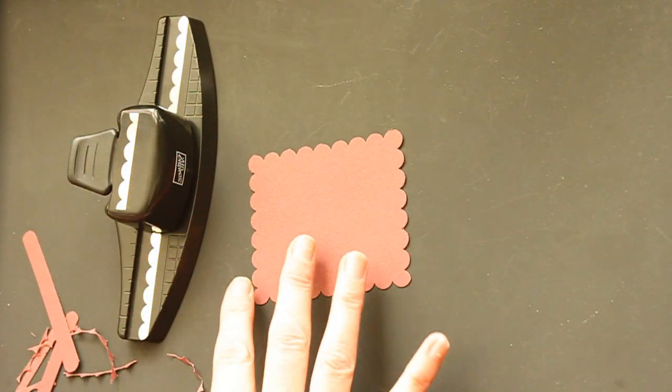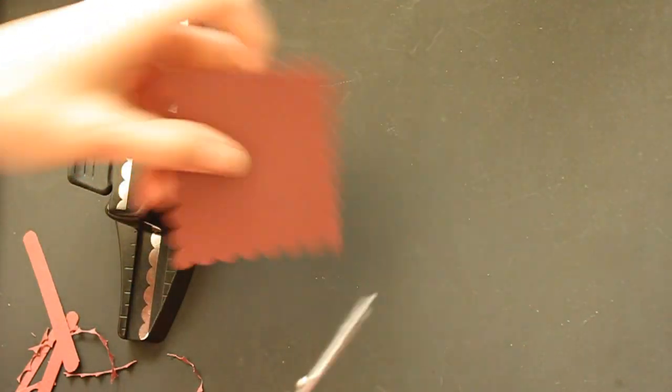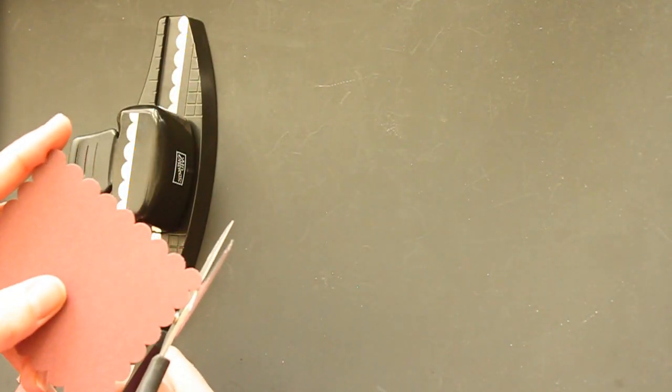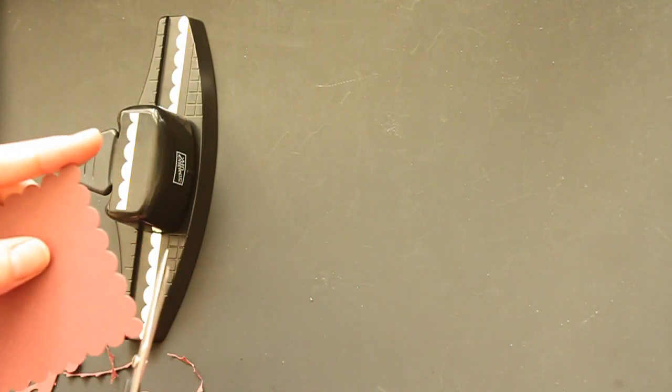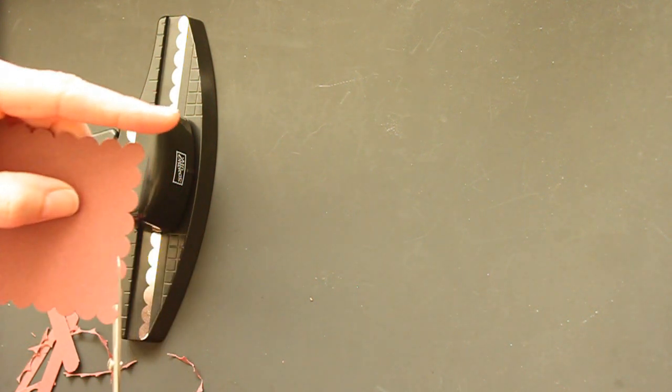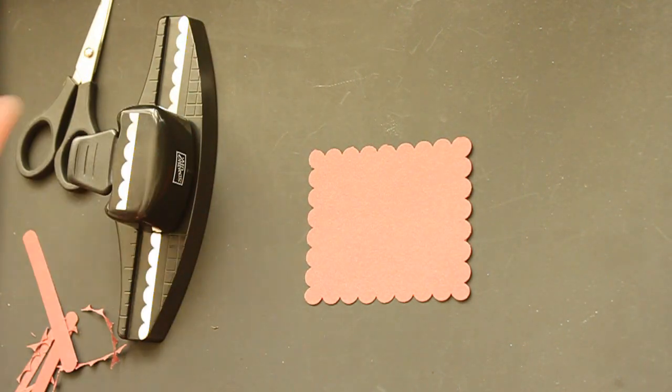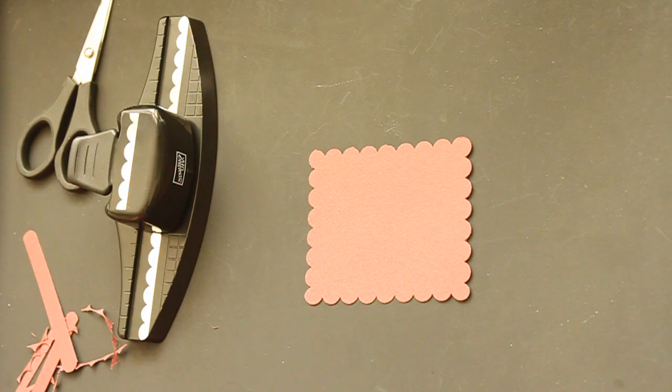Just trim those corners a little bit to make them even. I'll get the extra paper off. And your scallop rectangle is done.